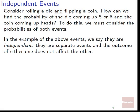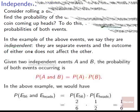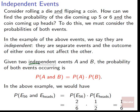Independent events: consider rolling a die and flipping a coin. How do we find the probability of the die coming up as a 5 or 6 and the coin coming up heads? These are independent events — rolling the die has no effect on flipping the coin and vice versa. Given two independent events A and B, the probability of both occurring is P(A and B) = P(A) × P(B).